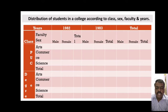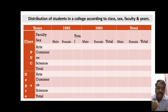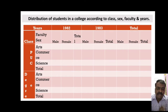The example shows the distribution of students in a college according to four different characteristics: class, gender or sex, faculty, and year. We have four different characteristics. In the table, data has been taken for two years, 1982 and 1983. Coming to class, we have two different classes: PUC and degree.